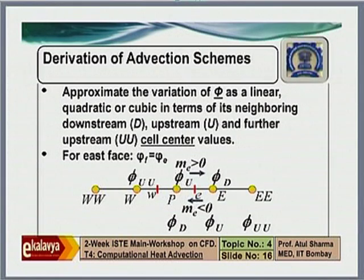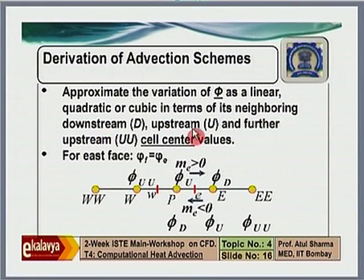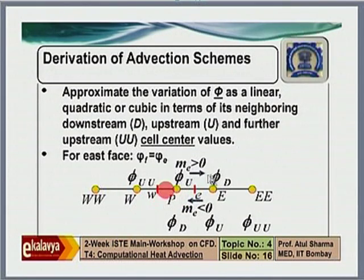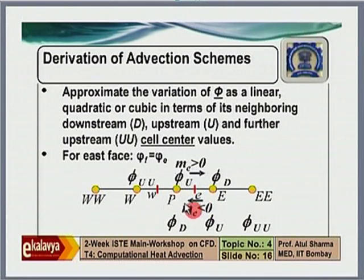The mathematical derivation of these schemes is straightforward. The advected variable φ is approximated locally as a linear, quadratic, or cubic polynomial in terms of downstream, upstream, and upstream-of-upstream neighbors. For a face center with flow in the positive x-direction: the upstream neighbor (U) is adjacent, upstream-of-upstream (UU) is one cell further back, and downstream (D) is on the other side. If the flow reverses, the labels swap accordingly.